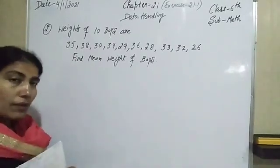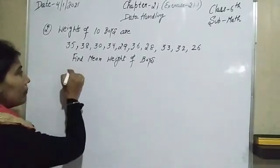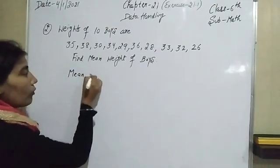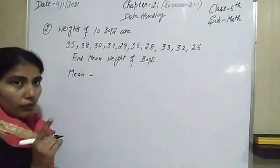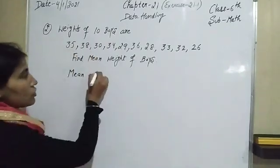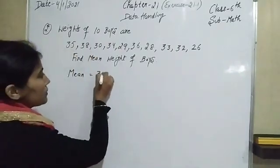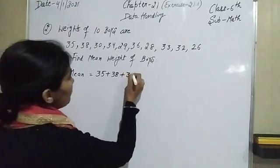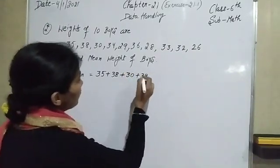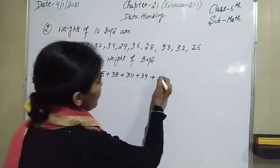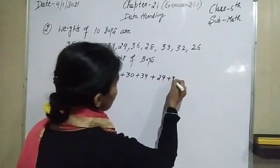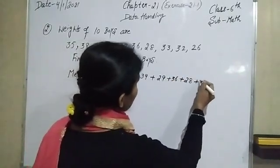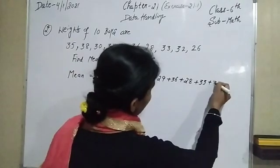Again using the same formula for finding the mean — sum of observations divided by the number of observations. So sum of these observations means I have to add: 35 plus 38 plus 30 plus 33 plus 34 plus 24 plus 29 plus 36 plus 28 plus 33 plus 32 plus 26, divided by the number of observations.